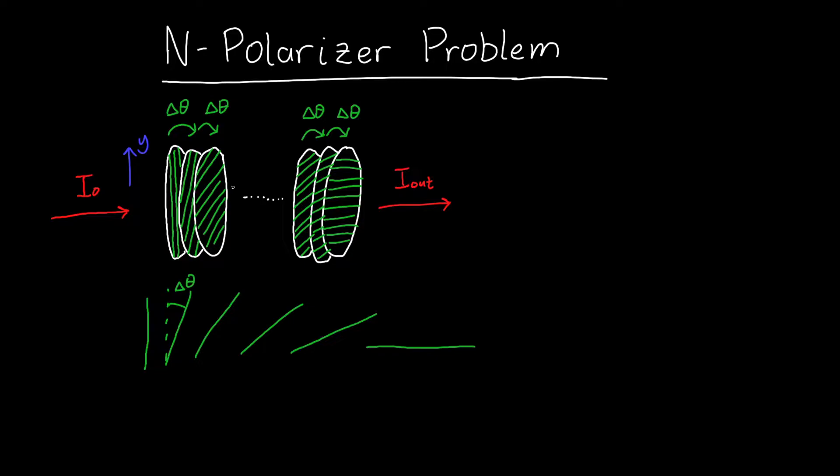After we get through n total polarizers, our final angle is at 90 degrees relative to the input polarization. This is actually a pretty cool problem, both mathematically, but also because we'll see at the end that this allows us to tilt light without losing very much energy at all. It allows us to change the polarization of light.